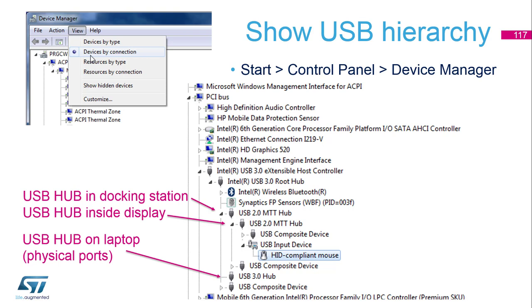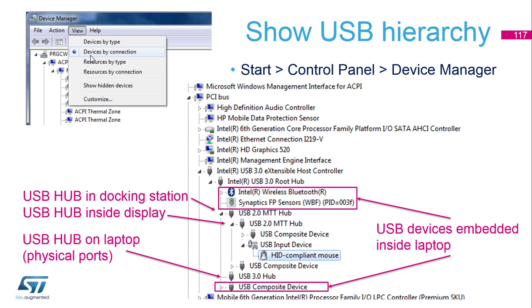Also, some laptops are able to offer a USB port directly connected to the root hub, but it is not a mandatory option. And even if all external USB ports on the PC are disconnected, you will still see a lot of devices already connected — these are internal laptop devices connected via USB, such as a touchpad, Bluetooth, sensors, or similar devices.